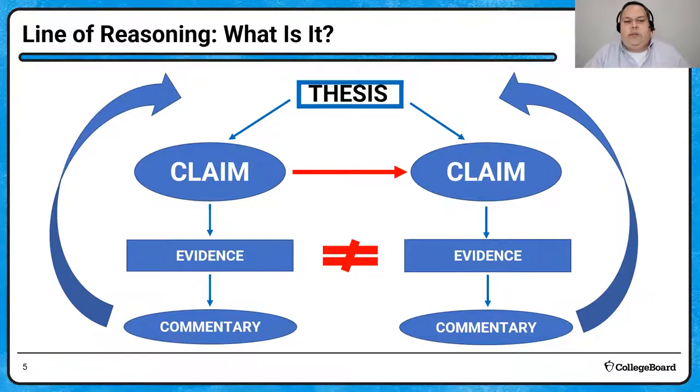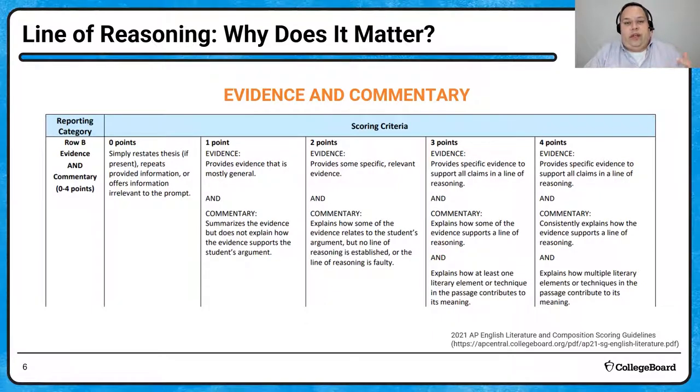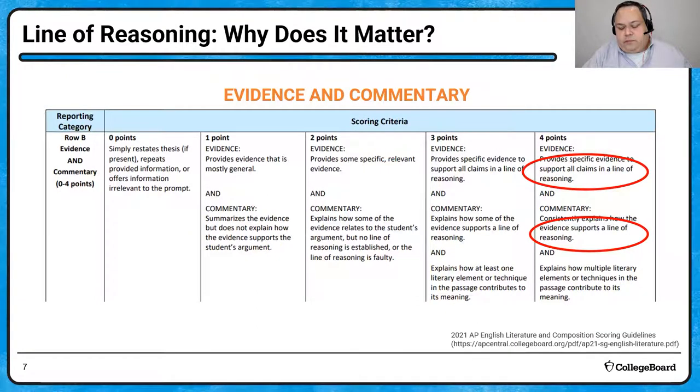And why does this matter? Why should we think about line of reasoning? Well, we have to ground ourselves on the scoring guidelines. Because there's tons of good advice that teachers can give you. There's tons of good advice that I can give you. But I want us to focus specifically on the requirements. What is it that will earn you points on this scoring guideline? And I want us to focus on these two statements here. To earn all four points in row B, you need to provide specific evidence to support all claims in a line of reasoning. And you have to consistently explain how the evidence supports a line of reasoning. So clearly, this notion of line of reasoning, this see-through line in your essay is significant if you want to maximize your points in row B, which is truly going to be the most significant portion, because that's where you're going to earn the most number of points, provided that you have a solid thesis that you have started from.